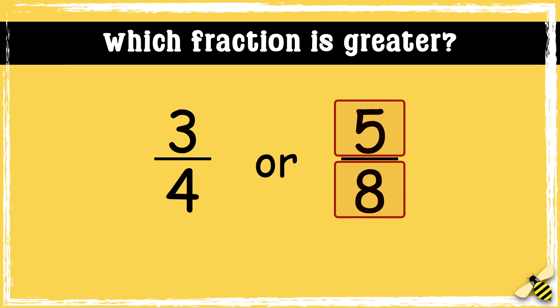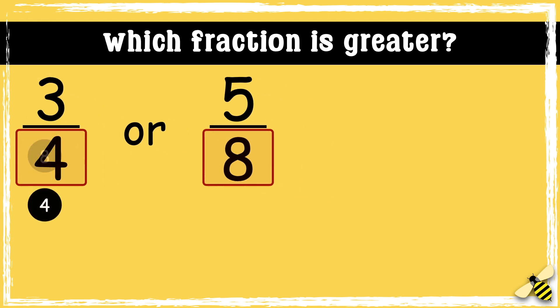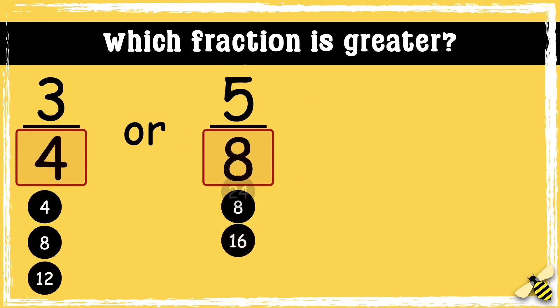You might think 5 eighths because 5 and 8 are both larger numbers, but this would be incorrect. The first thing we need to do is find a common denominator. To do this we need to find their lowest common multiple, so let's have a look at some multiples of 4 and 8.